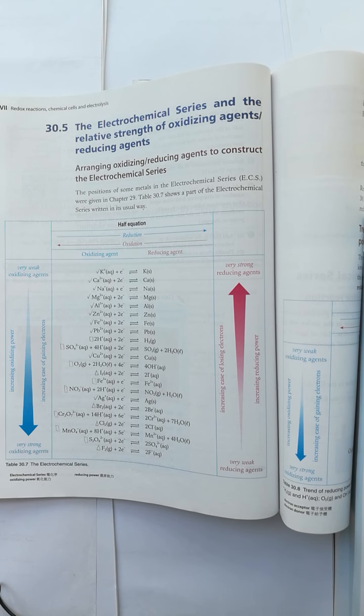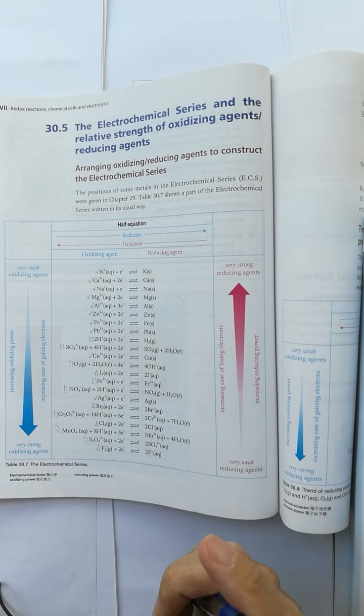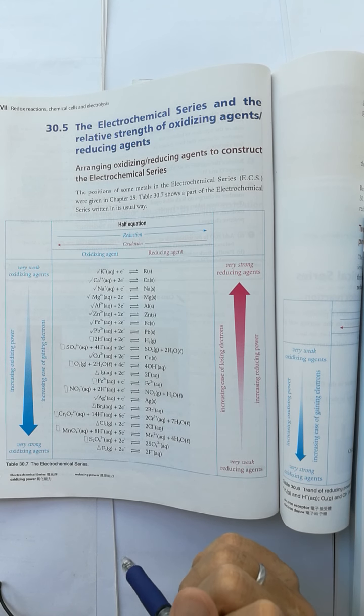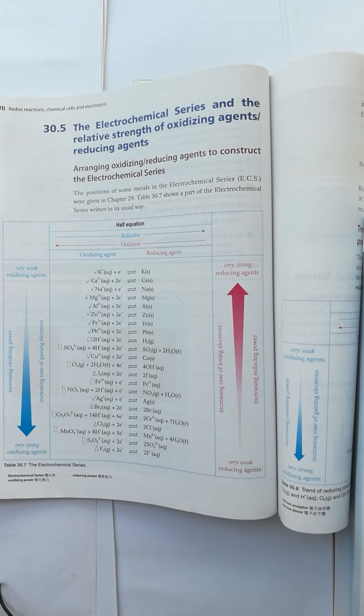What is the use of ECS? One of the uses is to predict whether the reaction occurs or not.